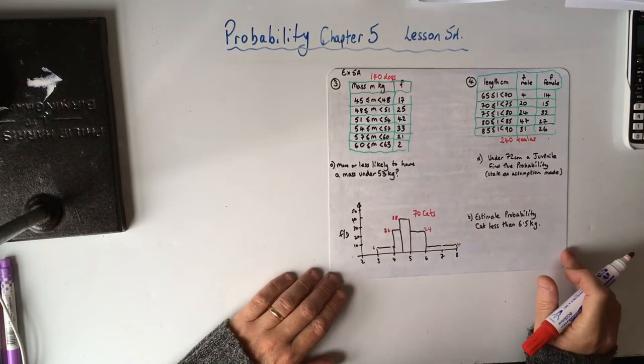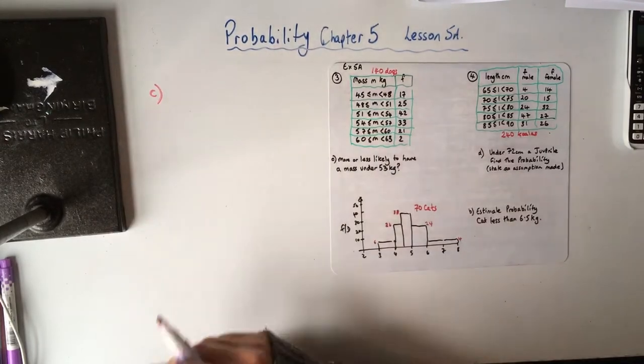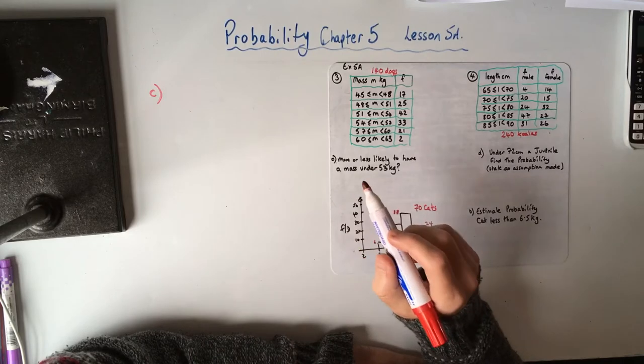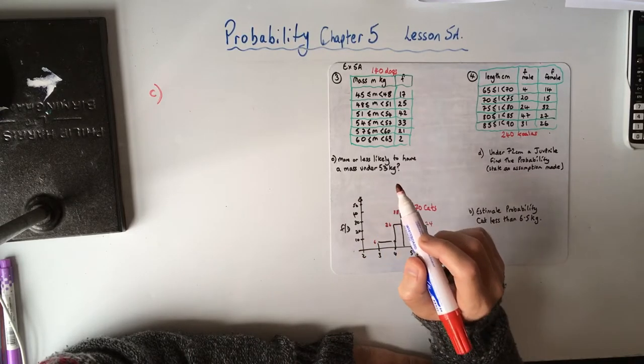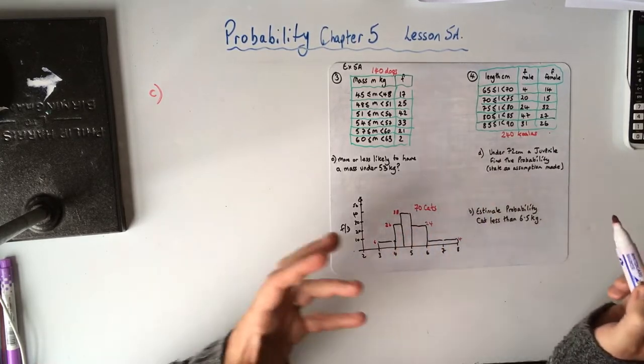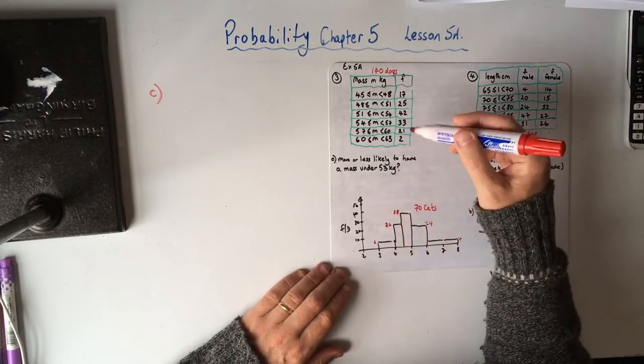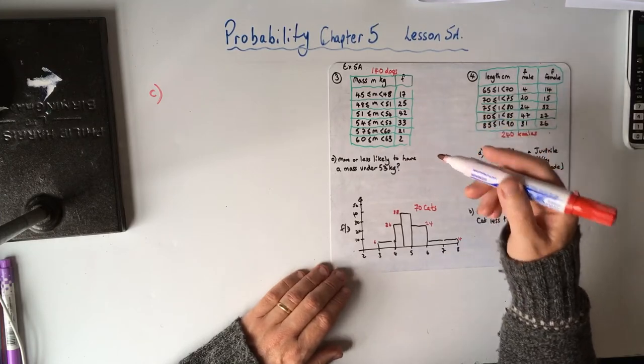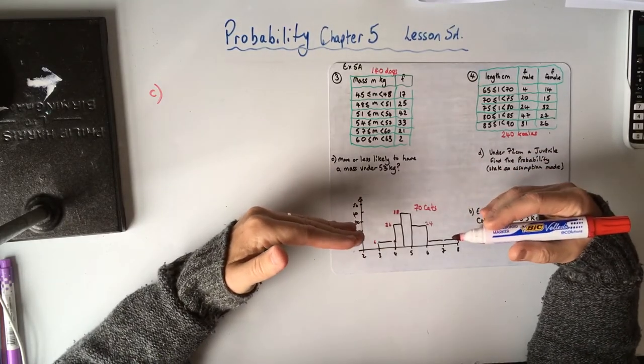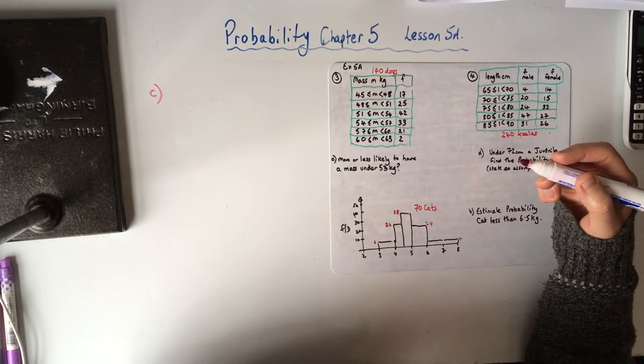So let's have a look at the interpolation bits, and that kicks in for part C, the last part. The actual full question says, is it more or less likely than a bull mastiff chosen at random has a mass under 53 kilograms and it says state one assumption you've made. So under 53 kilograms, 53 is sort of trying to find the middle point, the median, and say which side of the median is it.